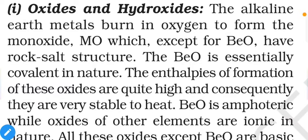The enthalpy of formation of these oxides is quite high, and consequently they are very stable to heat. BeO is amphoteric while oxides of other elements are ionic in nature. Amphoteric means it can show two different types of behavior which are opposite to each other — in certain cases BeO shows ionic nature, while in other cases it shows covalent nature.